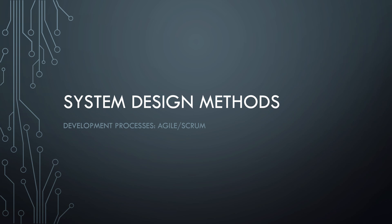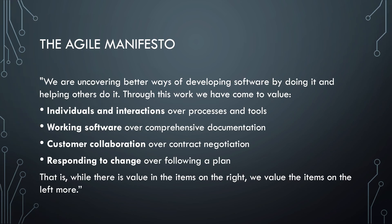In February 2001, 17 software developers met in Snowbird, Utah. During this informal meeting, they talked about flexible ways to develop software. These 17 developers all represented different Agile trends that aim to develop software with minimal bureaucracy. Together they wrote the Agile manifesto and the principles behind it.